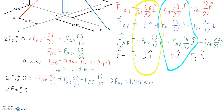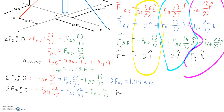The sum of forces in the Z direction, using all the K components, equals zero, and we can solve for the force in the tower. The force in the tower is −3.88 kips, or 3,880 pounds. The negative sign confirms our earlier assumption that the tower is in compression. I hope you enjoyed this video — feel free to ask questions in the comments, and I'm open to suggestions for future topics.